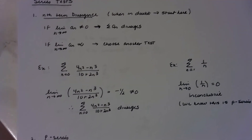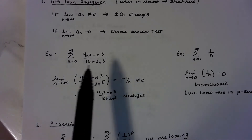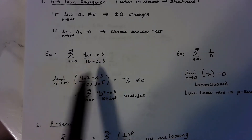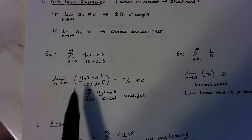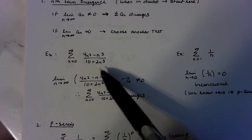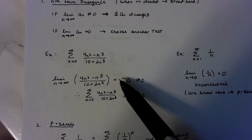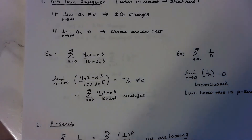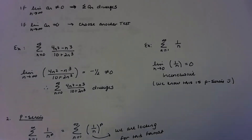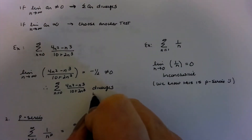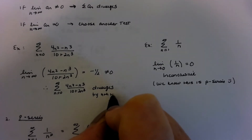Here we have 4n squared minus n cubed over 10 plus 2n cubed. If we take the limit of that, clearly we can see the degree of the numerator and denominator are the same, so we end up with negative one half. That does not equal zero, so we would say that series diverges — by nth term divergence.